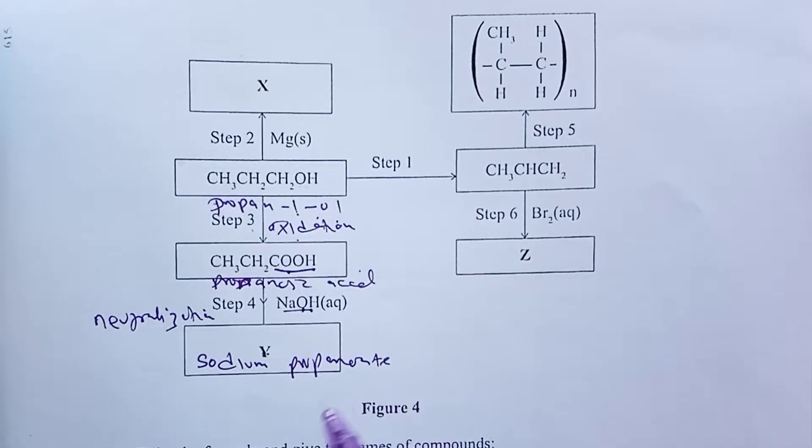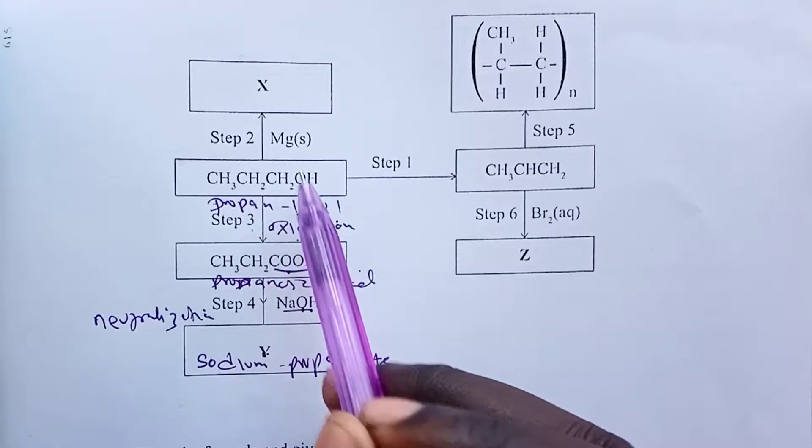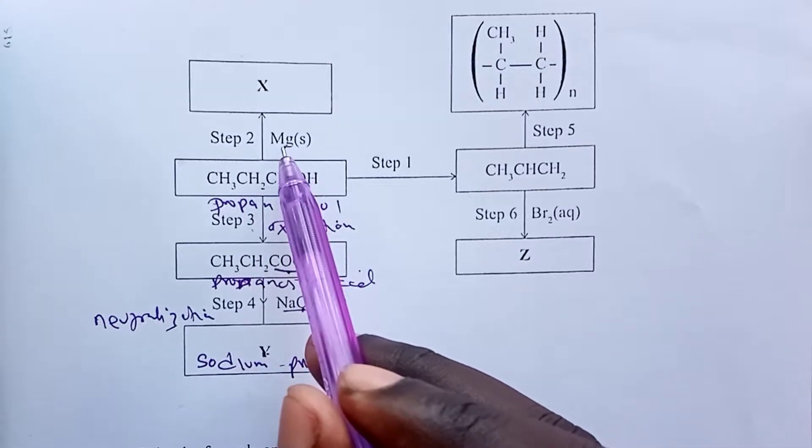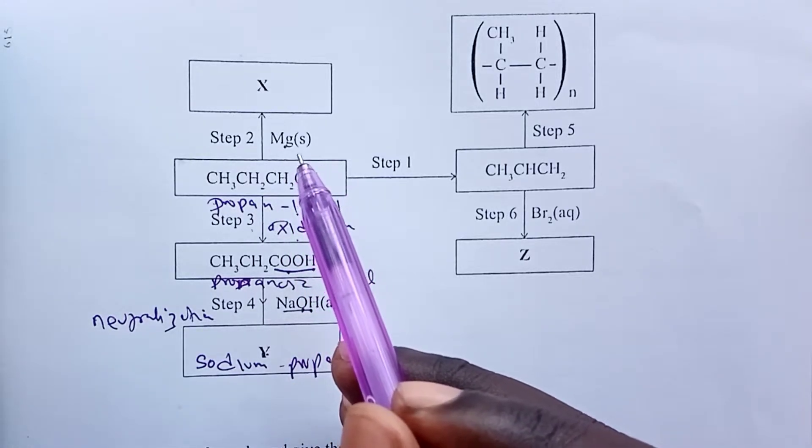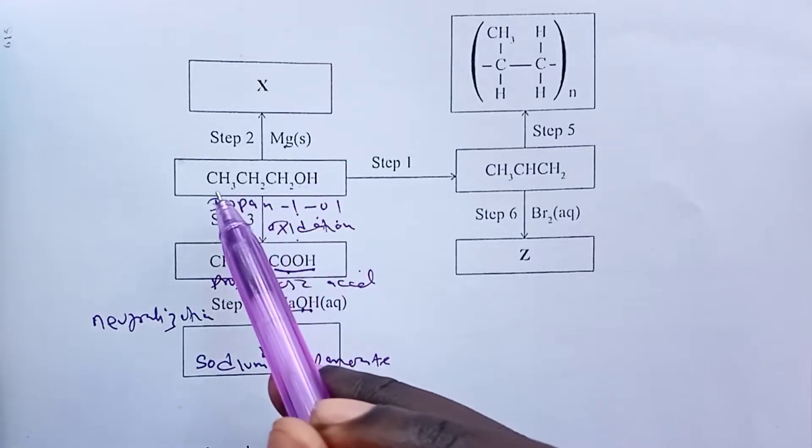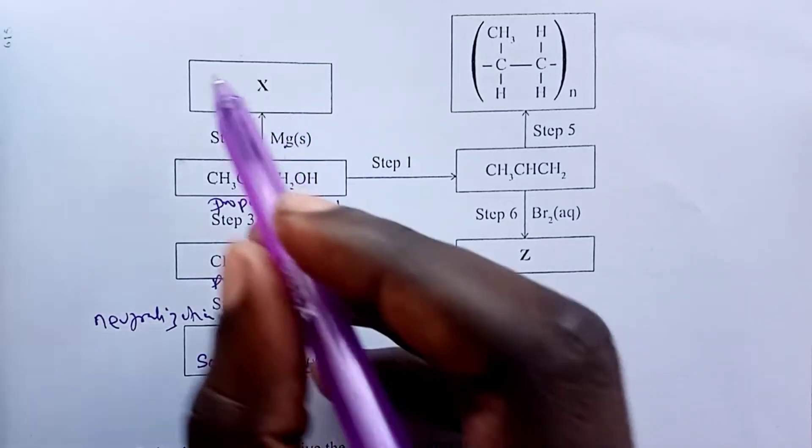Of course with some water, but we need the major product now. Somebody can argue that Y can also be water, yes, because we obtain the salt plus water. But here I believe we are being asked about the major product. Now, moving up, step two: we are reacting an alkanol with magnesium.